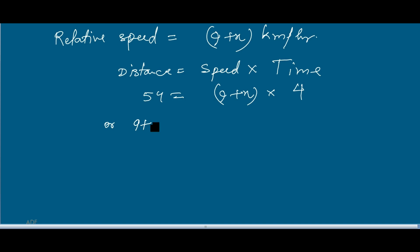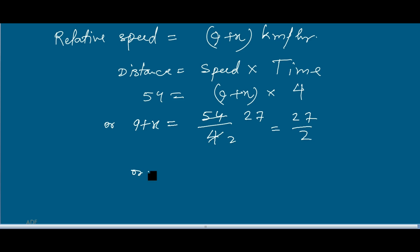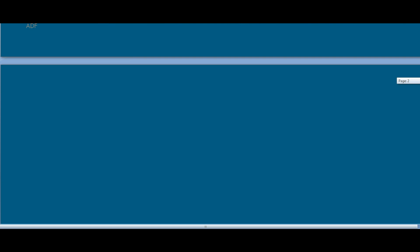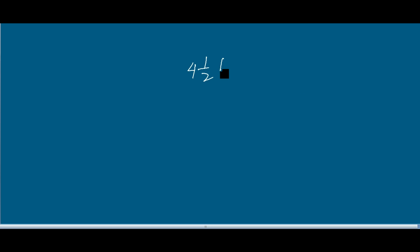So 9 plus x equals 54 divided by 4, which is 27 by 2. Therefore x equals 27 by 2 minus 9, that is 27 minus 18 by 2, which equals 9 by 2. So the speed of the stream is 4 and a half kilometers per hour.